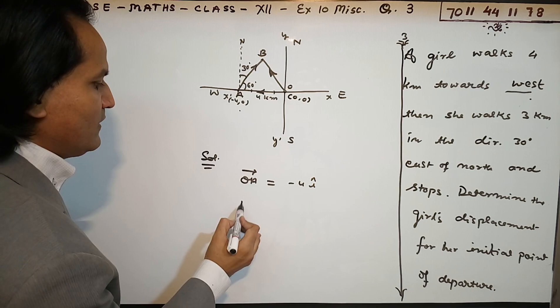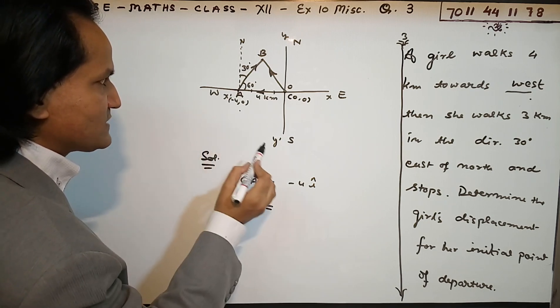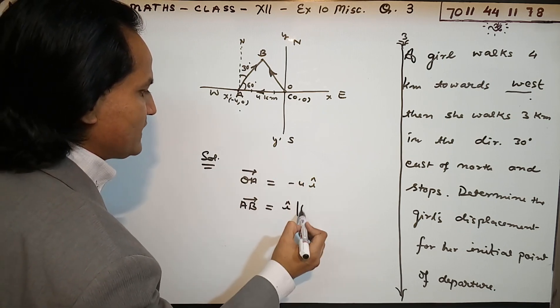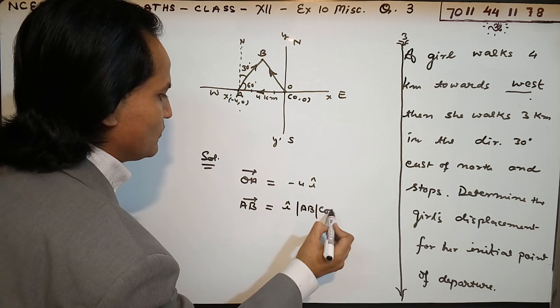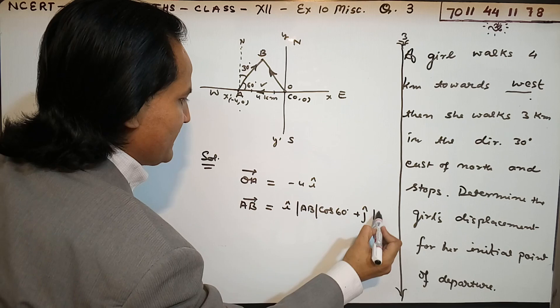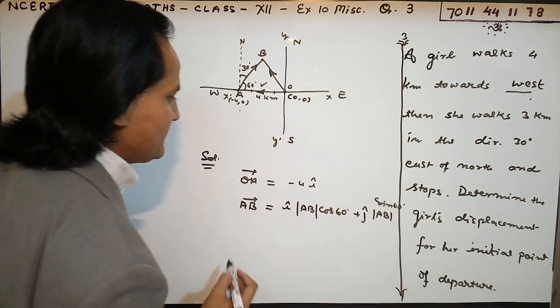Next, we need to find vector AB. You can easily calculate vector AB. I'll give you a simple formula: write i, then magnitude AB, then cos 60 degrees. The angle will be 60 degrees. Plus, write j again, magnitude AB, and sin 60 degrees.